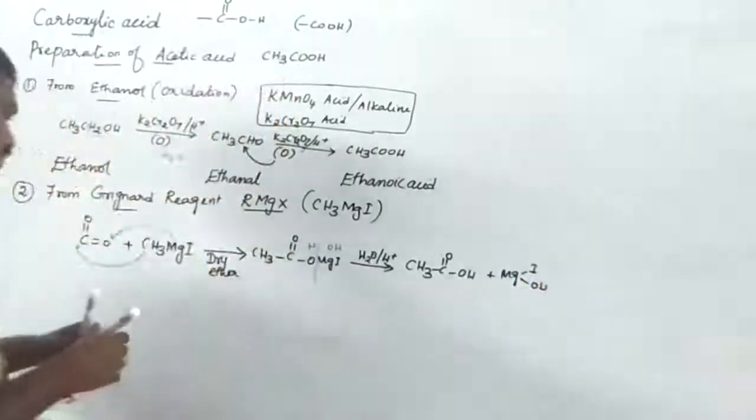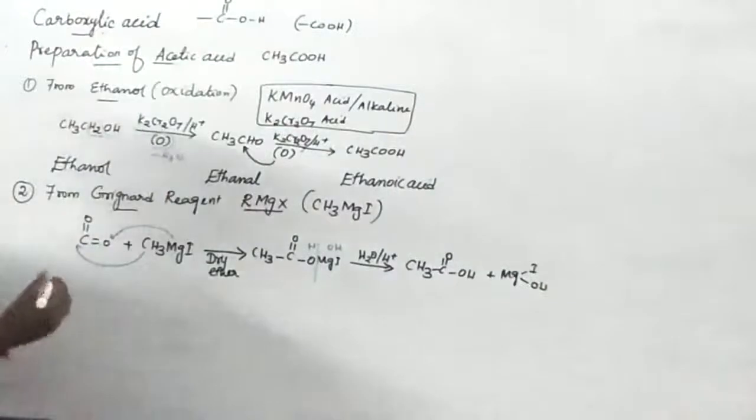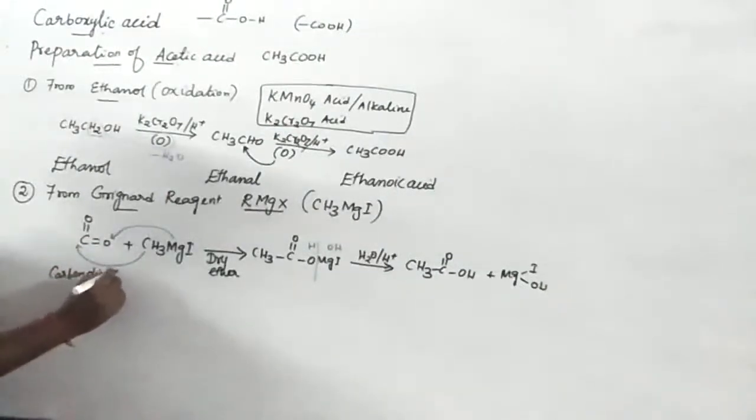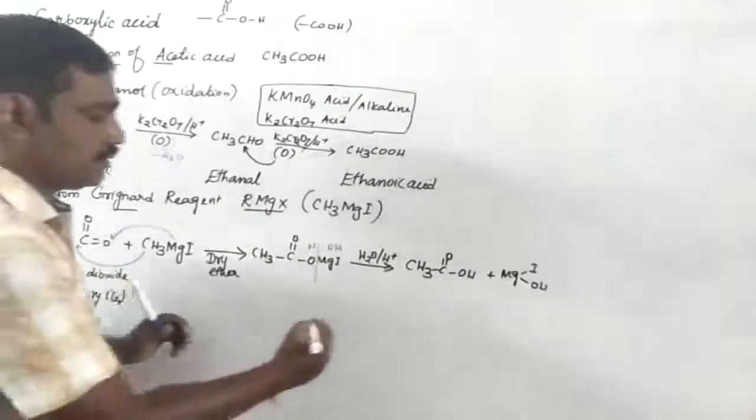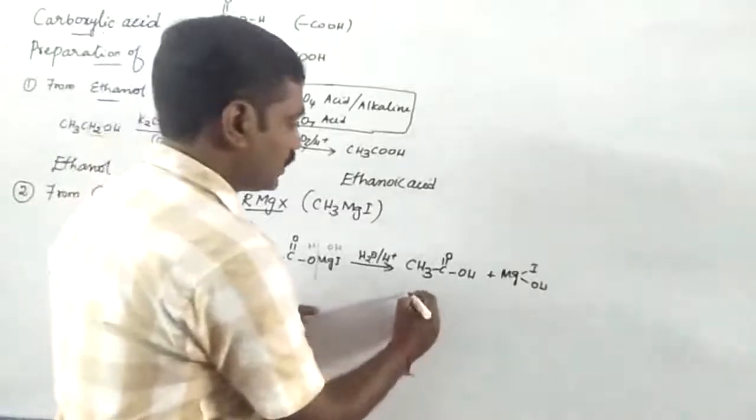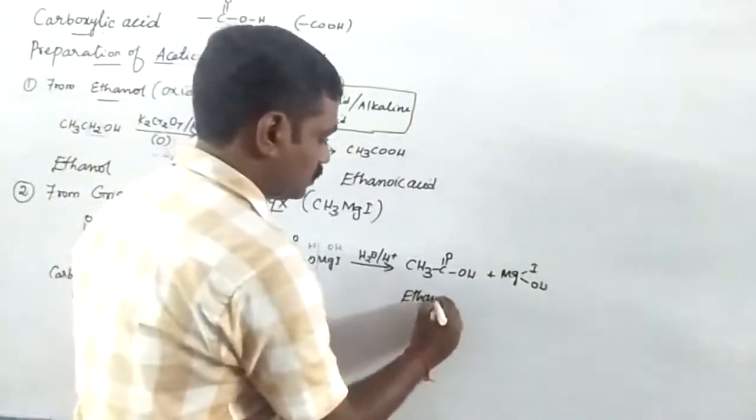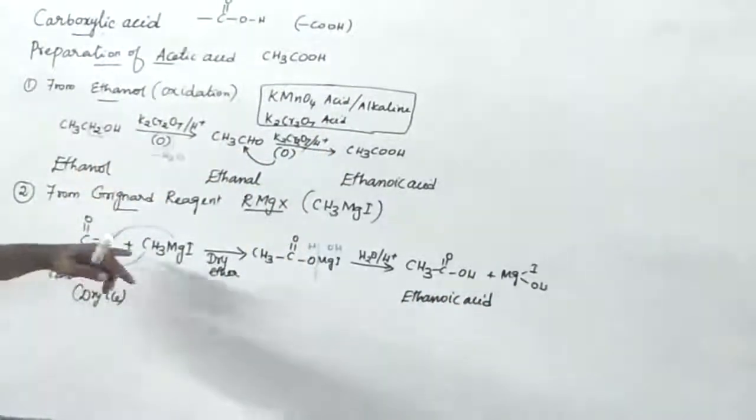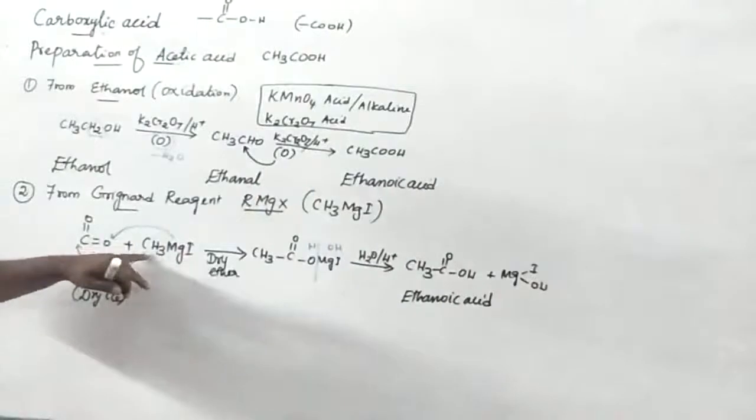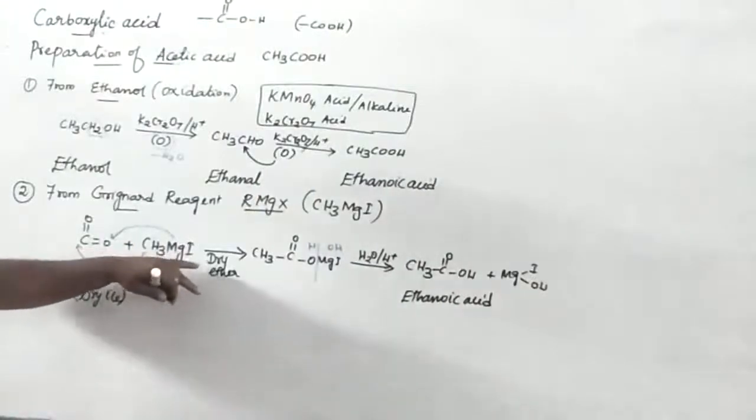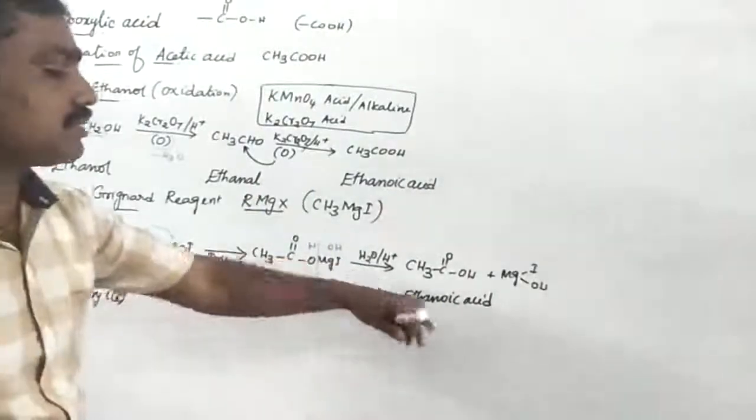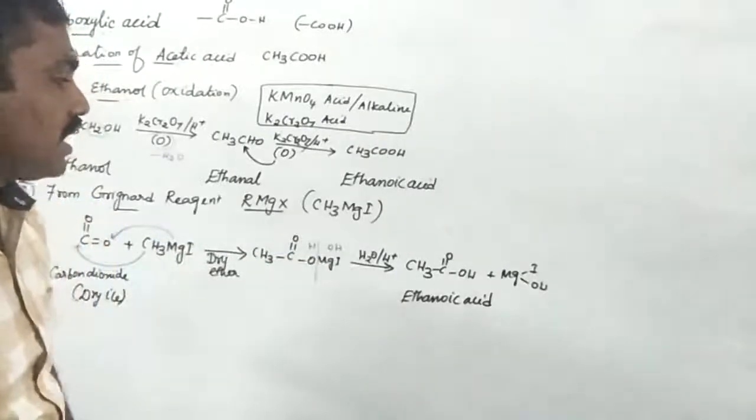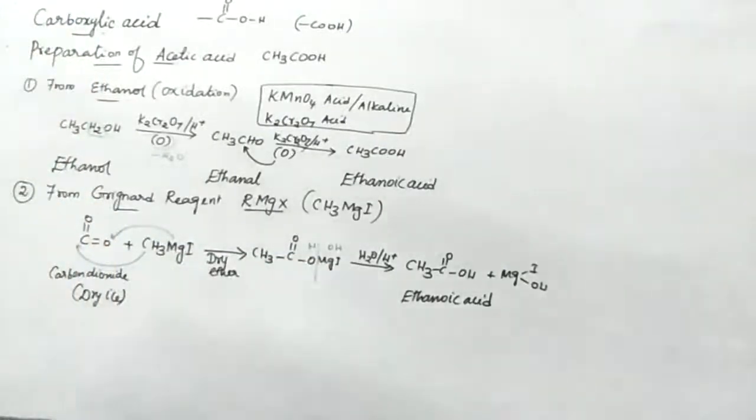So name - carbon dioxide, carbon dioxide, okay, dry ice, dry ice, then acetic acid or ethanoic acid, ethanoic acid, ethanoic acid, okay. Carbon dioxide, carbon dioxide, ethanoic acid, ethanoic acid. Okay, two methods preparation.